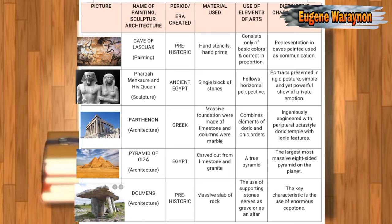Third is the Parthenon, an architecture of Greek era. It has a massive foundation made of limestone and columns of marble. It combines elements of Doric and Ionic orders. Its distinguishing characteristic is that it is ingeniously engineered as a Peripteral octastyle Doric temple with unique features. Next is the Pyramid of Giza, an architecture of ancient Egypt. It is carved from limestone and granite — a true pyramid, the largest and most massive eight-sided pyramid on the planet.